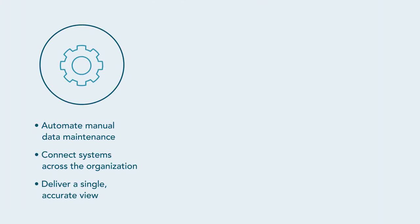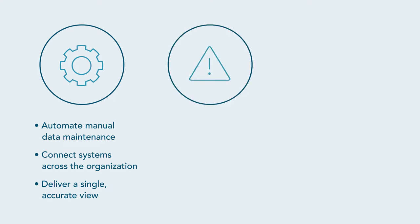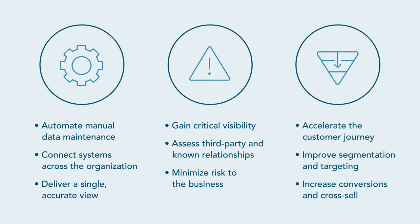Data and operations teams could automate manual data maintenance tasks and connect systems across the organization for a single accurate view of business relationships. Finance and risk teams could gain the visibility they need to assess third-party relationships and minimize risk to the business. Sales and marketing teams could accelerate every milestone of the customer journey with trusted insights from targeting to conversion and cross-sell.